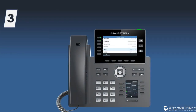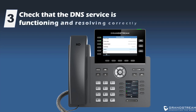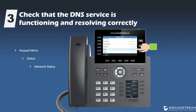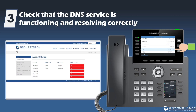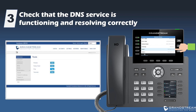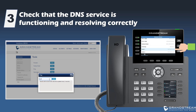Another common issue that might cause the phone not to register is incorrect DNS information. This might become a problem if your VoIP provider is using a domain name instead of an IP address. You can use the keypad menu to check the DNS information under network status. You can also use the tools available from the web interface of the phone under the Maintenance tab, and use the ping tool to enter the domain name associated with the SIP server.